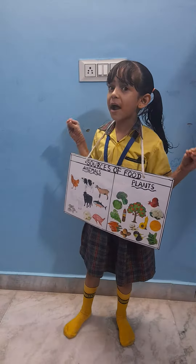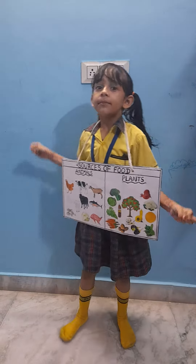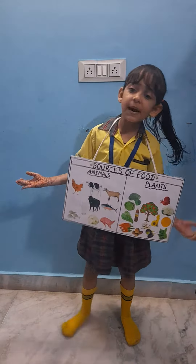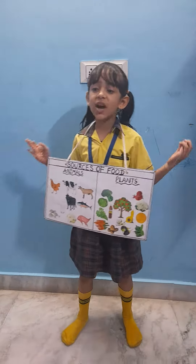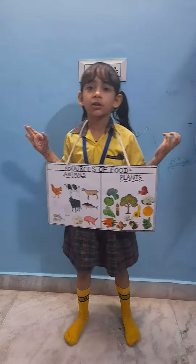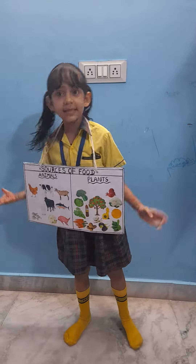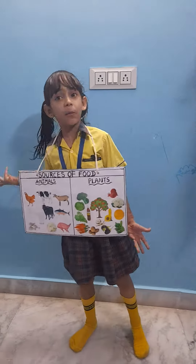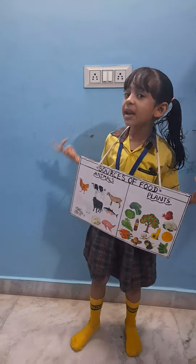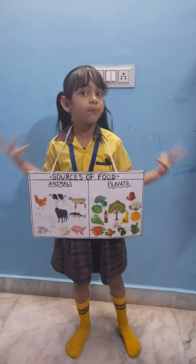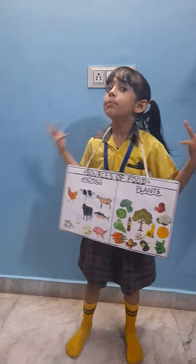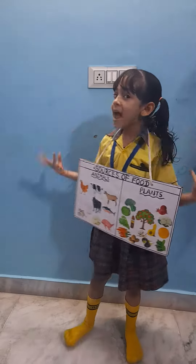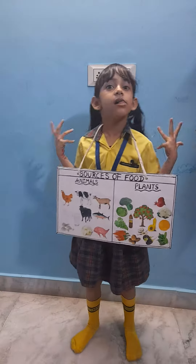Plants provide us fruits and vegetables which are an important source of fiber, protein and carbohydrates. Different parts of plant provide different food material. Let us have a look.